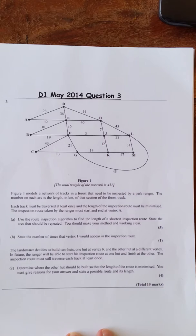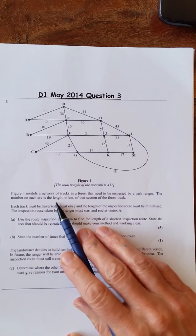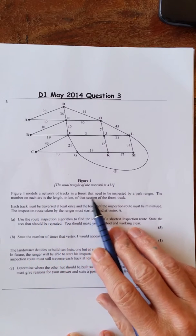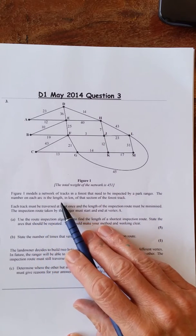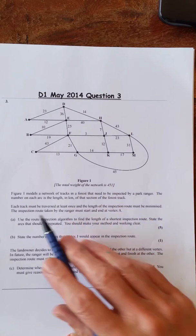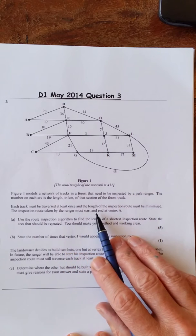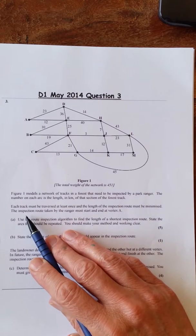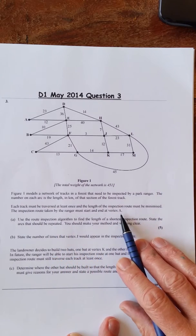Question 3 is a route inspection question. One of the clues is when we give them the total weight here. We have Figure 1 models a network of tracks in a forest that need to be inspected by a park ranger. The number on each arc is the length in kilometers of that section of the forest track. Each track must be traversed at least once and the length of the inspection route must be minimized. The inspection route taken by the ranger must start and finish at vertex A.